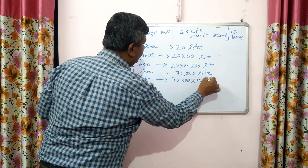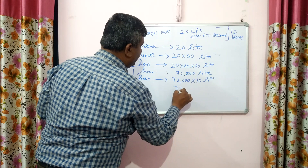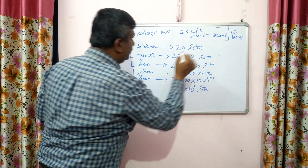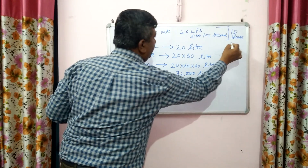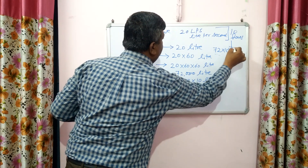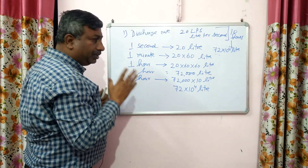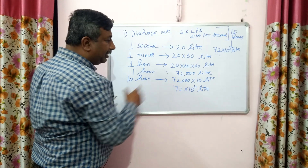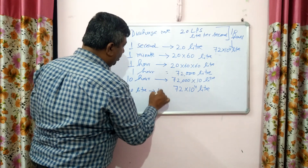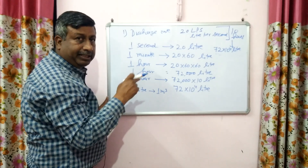In 10 hours, the volume of water is: in 1 hour it is 72,000 litres, so in 10 hours it is 72 × 10⁴ litres. Then convert this litres into cubic metres: 1000 litres equals 1 cubic metre, so divide by 1000.